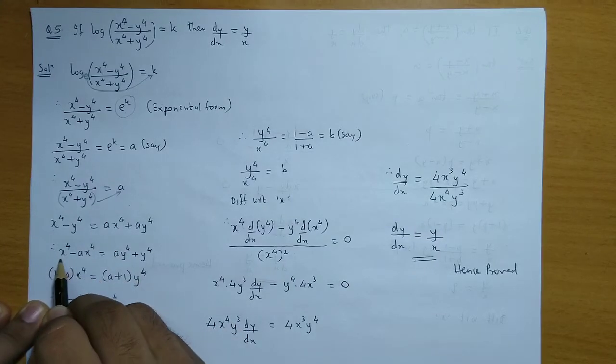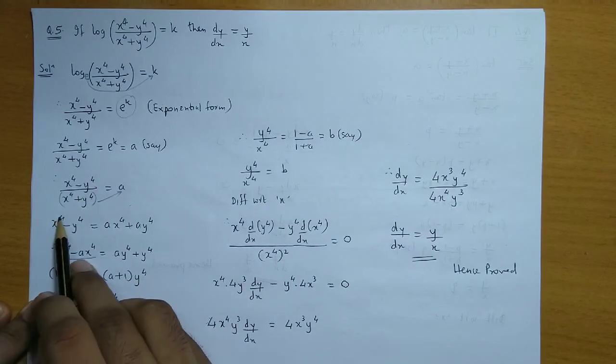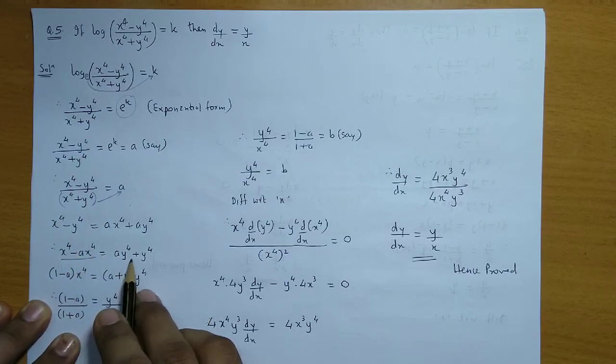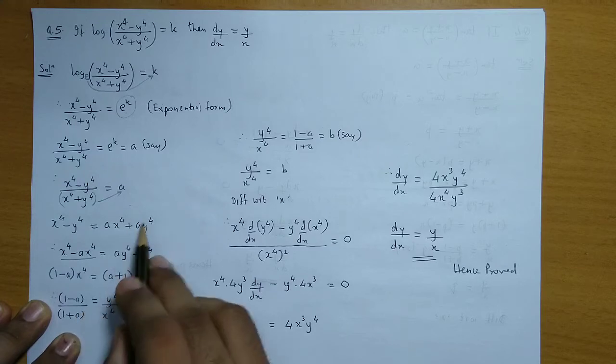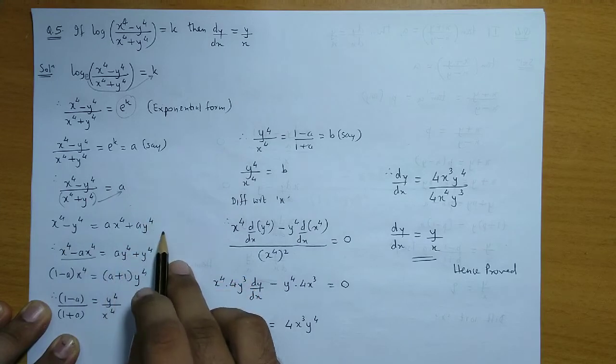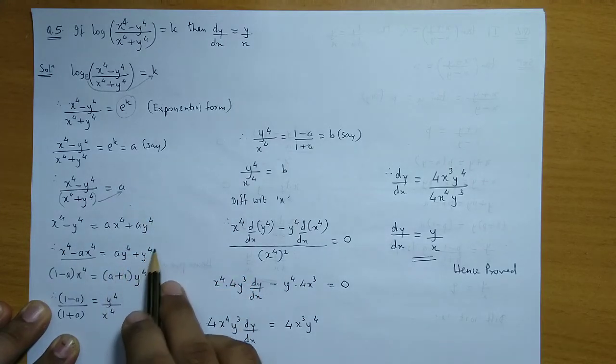So on the left hand side we have taken all x terms. So x⁴, and this term goes to the left, so minus a times x⁴. On the right hand side all y terms will come. So a times y⁴, and this y term coming to the right side becomes plus y⁴.